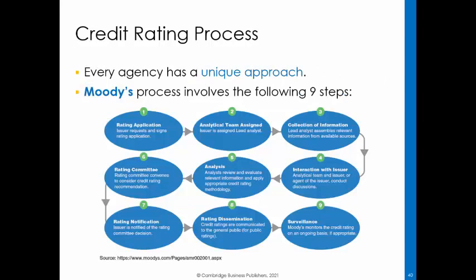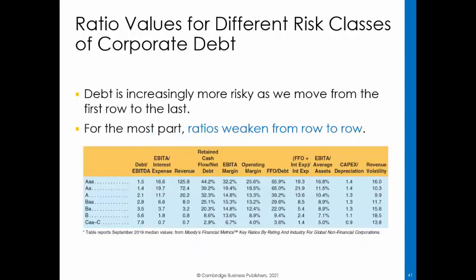Each credit rating agency has its own unique approach to credit rating. Credit rating agencies have access to information not available to other lenders — Regulation FD does not apply to credit rating agencies. Typically, the agencies create analyst teams comprising a primary analyst as team leader and other analysts and specialists who meet face-to-face with managers of the company being rated. Each rating agency has analysts who have a deep understanding of particular industries, because risk drivers vary markedly across industries. After assessing country and industry risk, analysts consider firm-specific risk. The analyst team gathers financial statement data to compute and analyze financial ratios such as those discussed earlier. A list of ratios that Moody's Investor Services uses with median averages for various risk classes is shown on this slide.